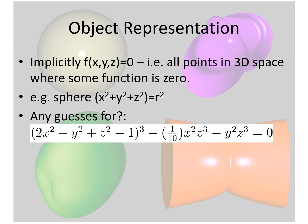We will look at three ways to represent objects. First, implicit representation; second, parametric; and third will be a plane approximation in the form of a geometric mesh.